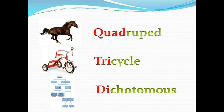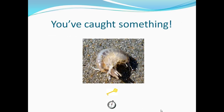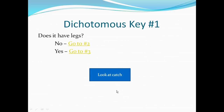Let's work through an example. Here we have a macroinvertebrate that we just caught in the Chesapeake Bay. What is it? Here's where a dichotomous key comes in handy. We click on the key to begin.